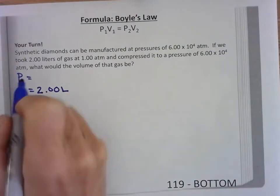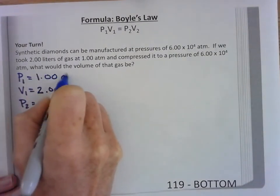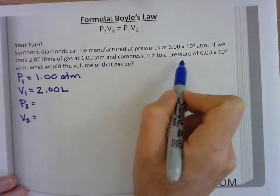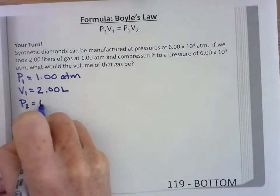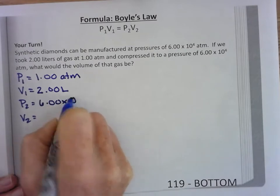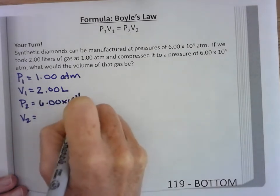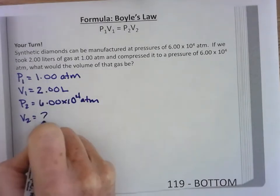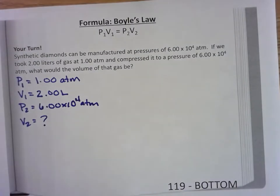And I have 1.00 atmospheres, and I compress it to a pressure of 6.00 times 10 to the 4th atm. What would the volume be? So this time I'm looking for volume.